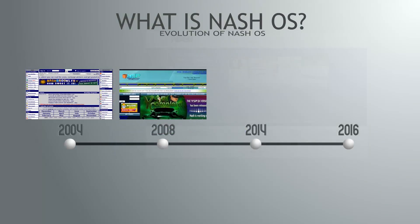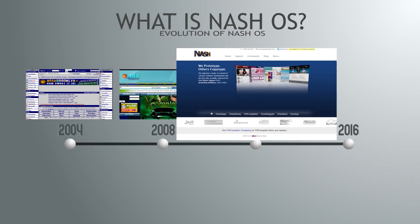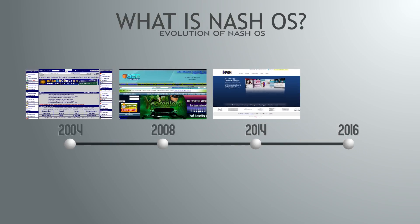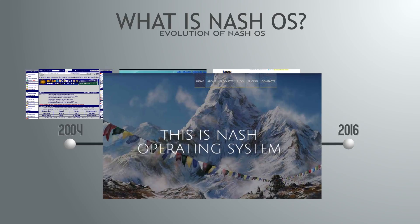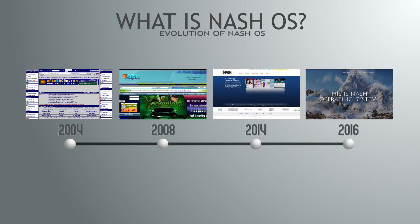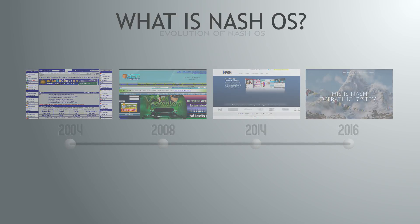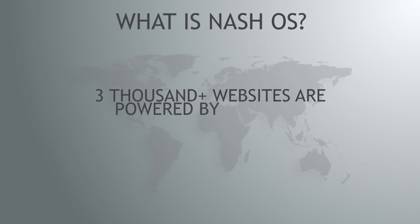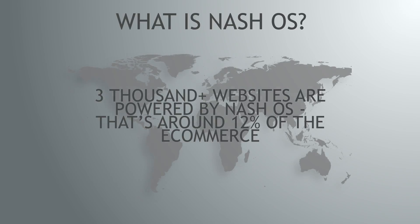Over the years NashOS has evolved into a full-fledged e-commerce platform powering e-commerce websites, online auctions, business websites, classifieds, blogs, forums, and real estate — just to name a few. Nowadays NashOS powers more than 3,000 websites and it's a popular e-commerce platform on the web.